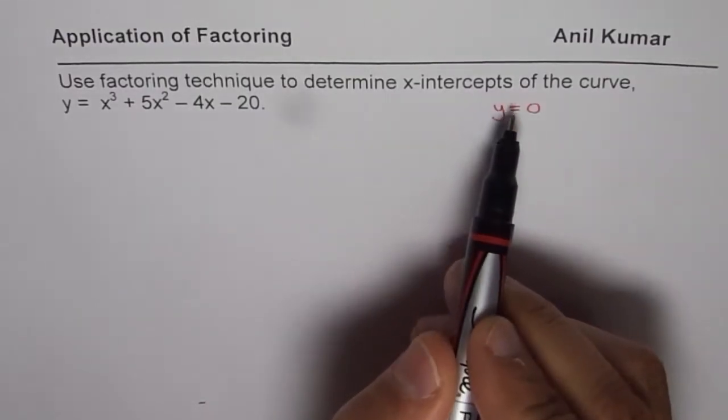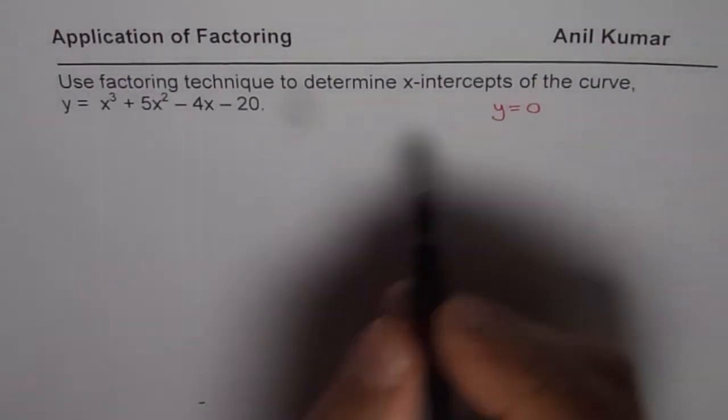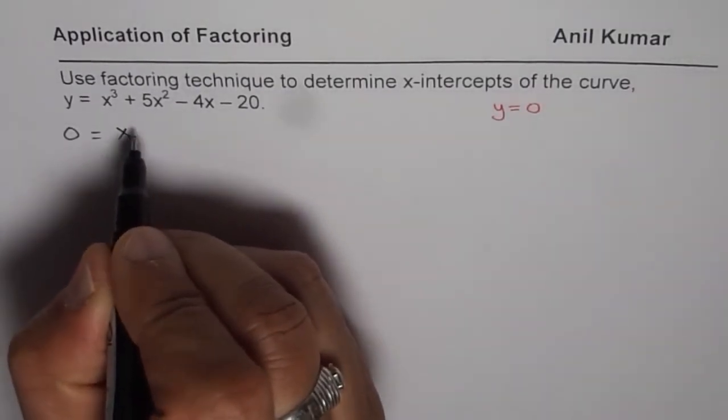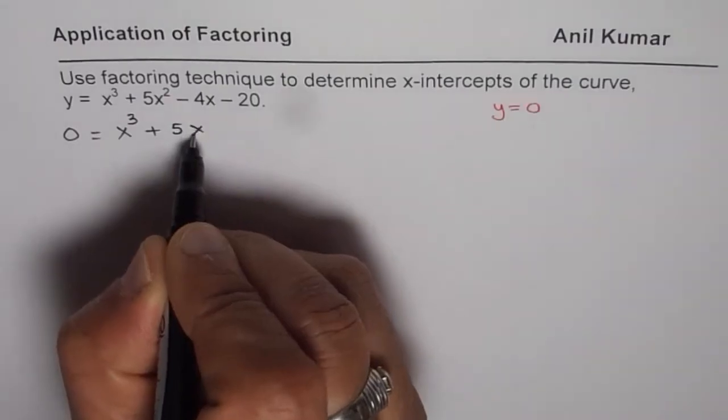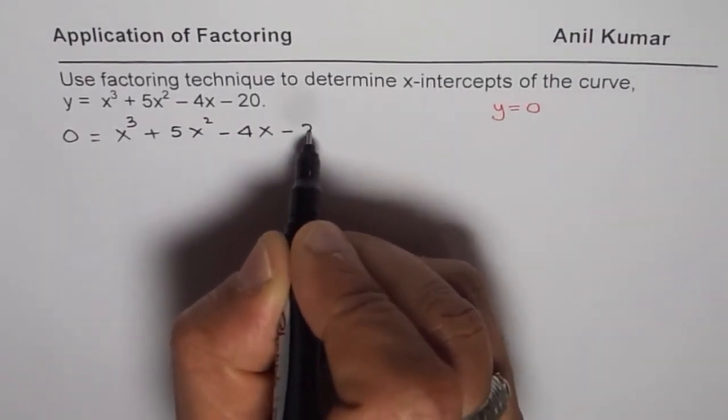To find x-intercept, we should equate y to 0 and solve for x. That is what it really means. So, let us write y = 0 and then the equation which is x³ + 5x² - 4x - 20.